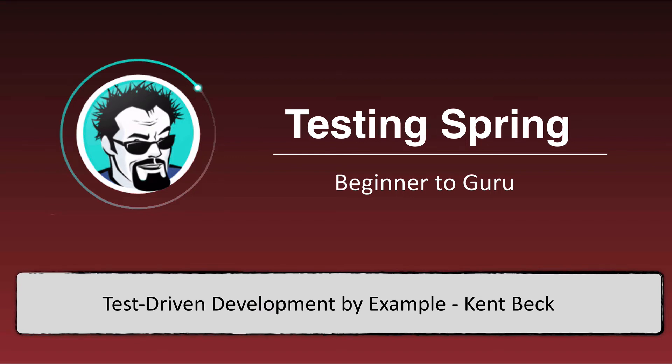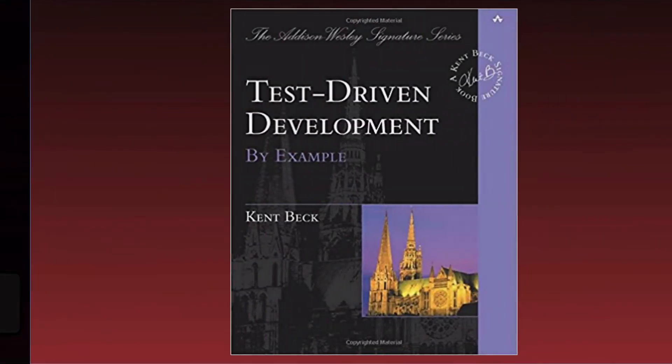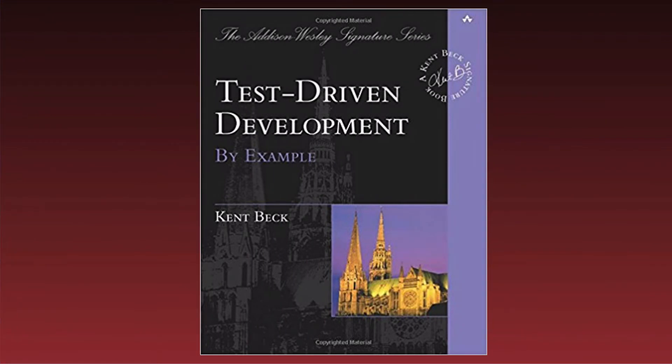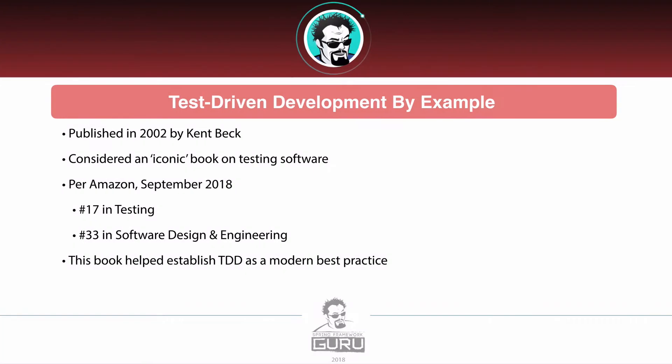In this video we are going to talk about the book and this entire section: Test-Driven Development by Example, highly influenced by a book by Kent Beck. This book was originally published back in 2002, and it's a rather iconic book on testing software. This is what helped establish test-driven development as a modern best practice, and Amazon is listing it at number 17 in testing and number 33 in software design and engineering.